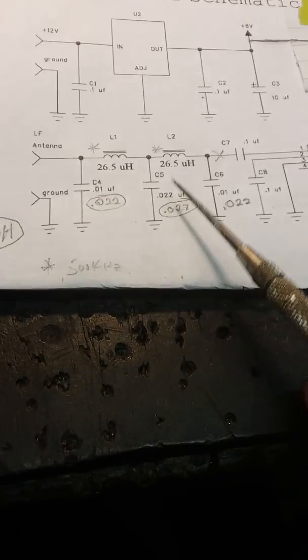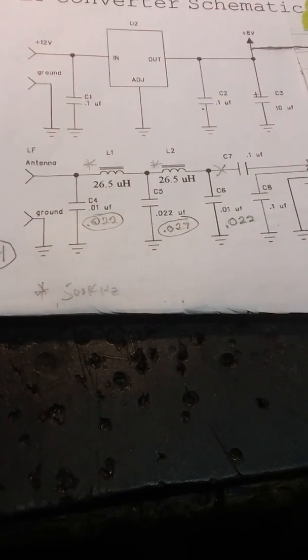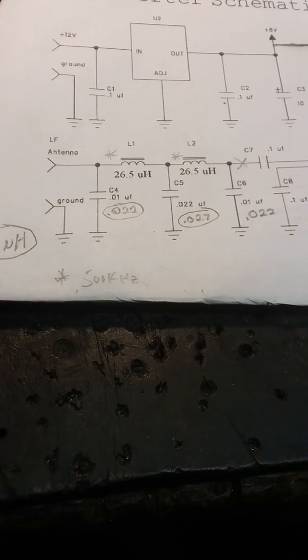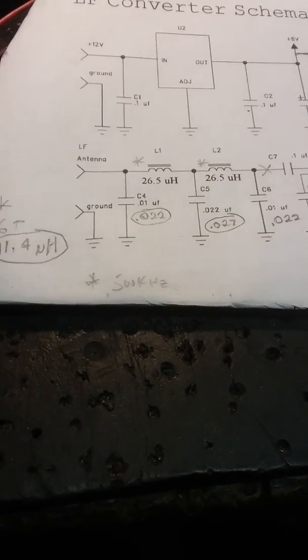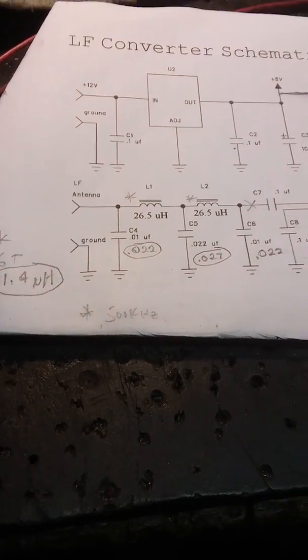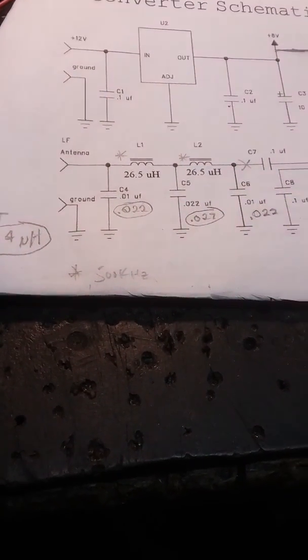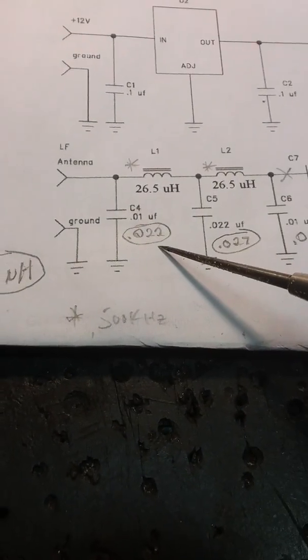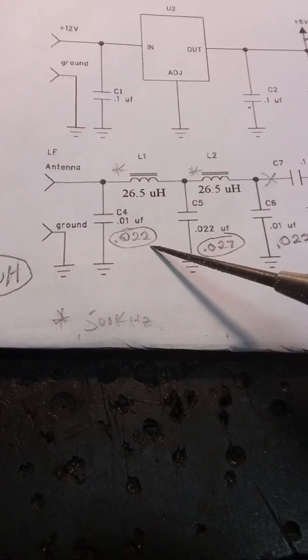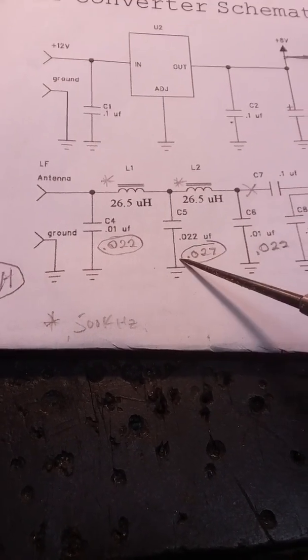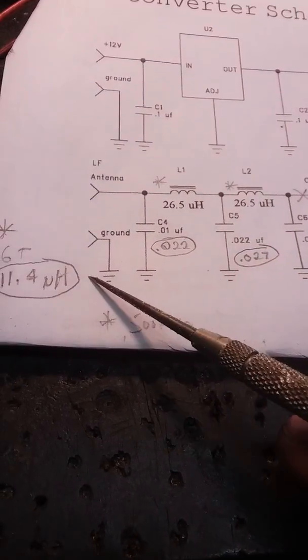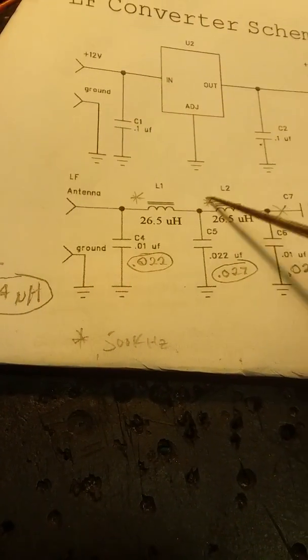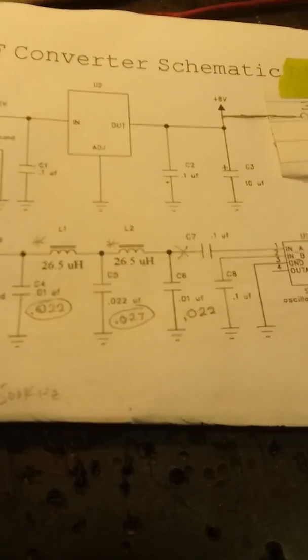I modded this thing to go from 300 kilohertz up to 500 kilohertz so I could come right up to the edge of the broadcast band. In doing so, I had to change these caps to 0.02s - 0.02 here and a 0.27 here. And I had to rewind the chokes to 11.4 microhenries instead of 26 and 26.